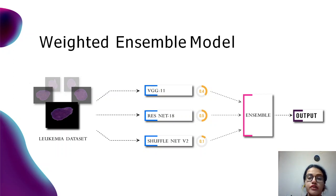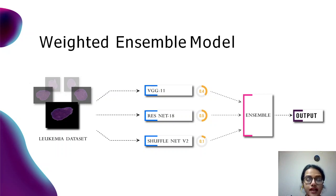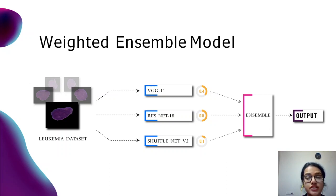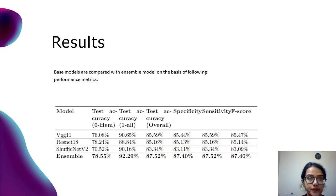The final process was to weight these models. After various experimentations, VGG-11 was given a weight of 0.4, meaning its results are used 40% of the time. ResNet-18 was given the maximum weight of 0.5, and ShuffleNet V2 was given the lowest weight of 0.1. An ensemble model was formed using these three models, leading to the final output.